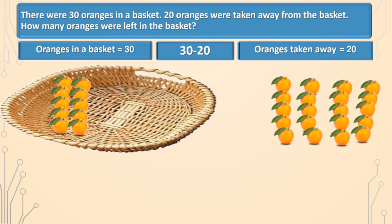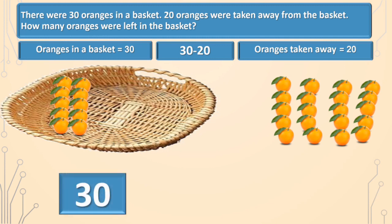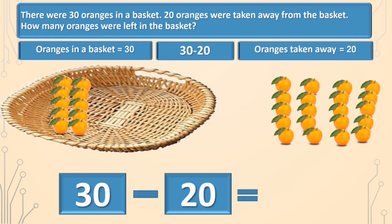To find the number of oranges left, we will subtract 20 from 30. Oranges in a basket is equal to 30, and the oranges taken away is equal to 20. 30 minus 20 is equal to 10. So, 10 oranges are left in the basket.